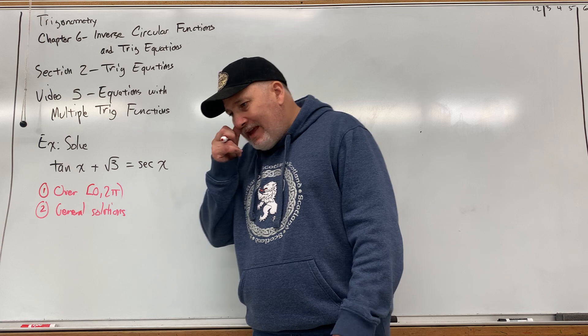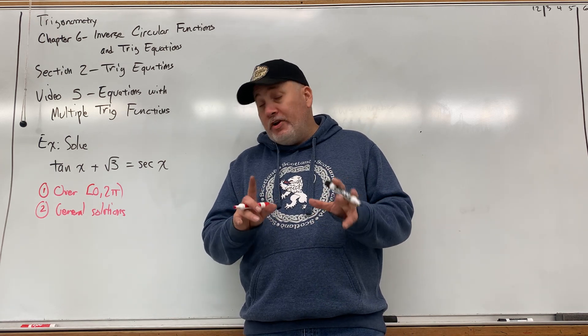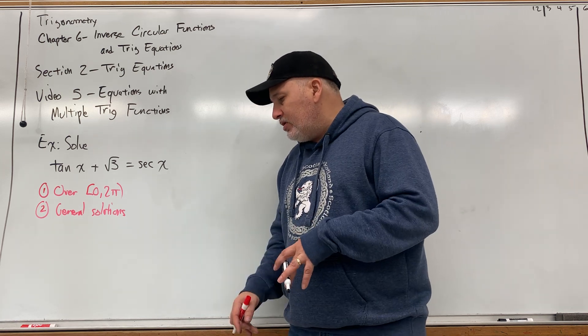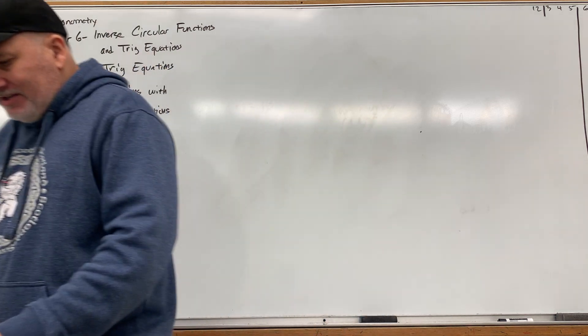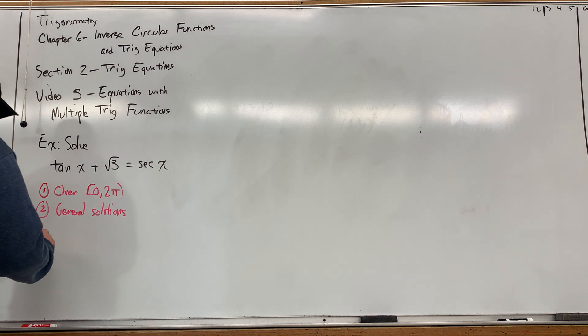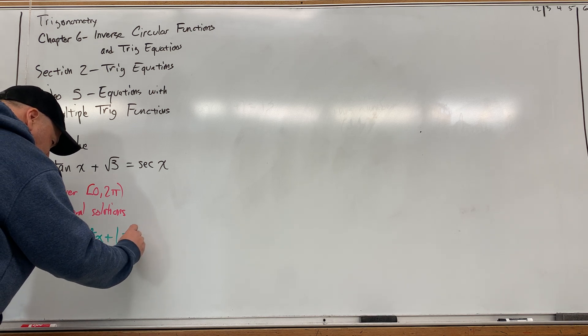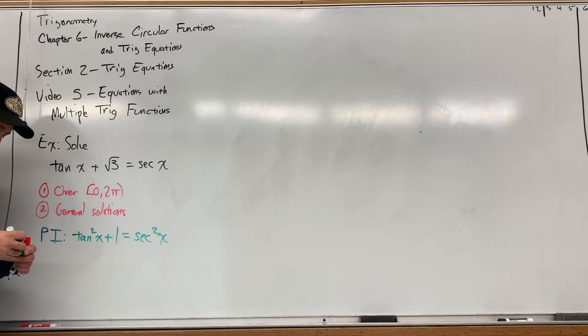Now we can try to transform this into having one trig function instead of two, but to do that we would have to change either tangent to secant or vice versa using an identity. Now is there an identity that connects secant and tangent? Of course there is. The identity that connects them is a Pythagorean identity that says tangent squared of x plus one is equal to secant squared of x. So if I had a tangent squared in the equation or a secant squared in the equation, I can make a change and get this down to a single trig function problem. I don't have any squared trig functions.